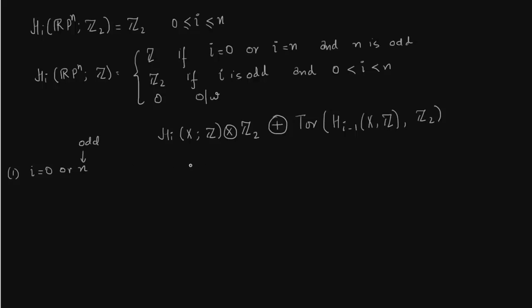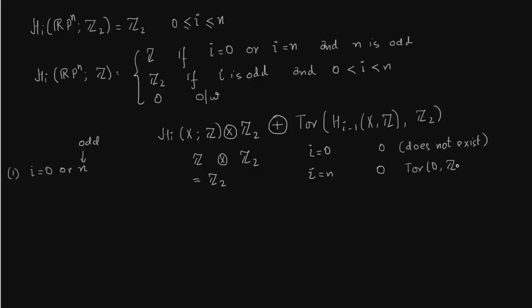In Case 1, the first term gives Z tensor Z2 = Z2, from the tensor product property. For i = 0, H_{-1} does not exist so the Tor term is 0. For i = n with n odd, i - 1 is even, and H_{i-1}(RP^n, Z) = 0 for even dimensions, so Tor(0, Z2) = 0. Thus the result is Z2.